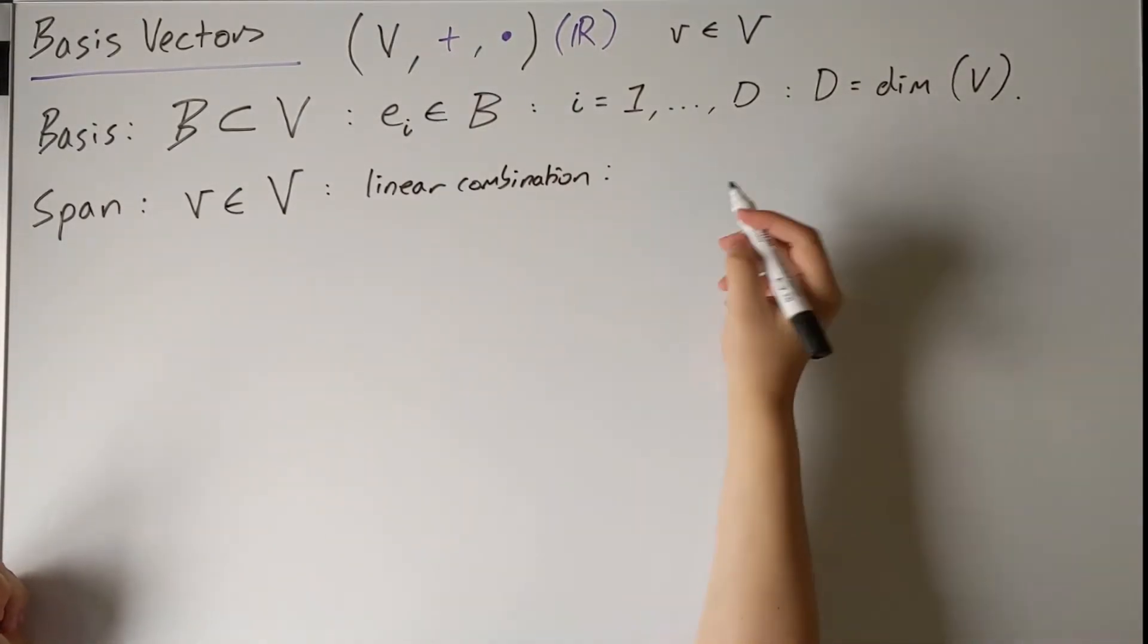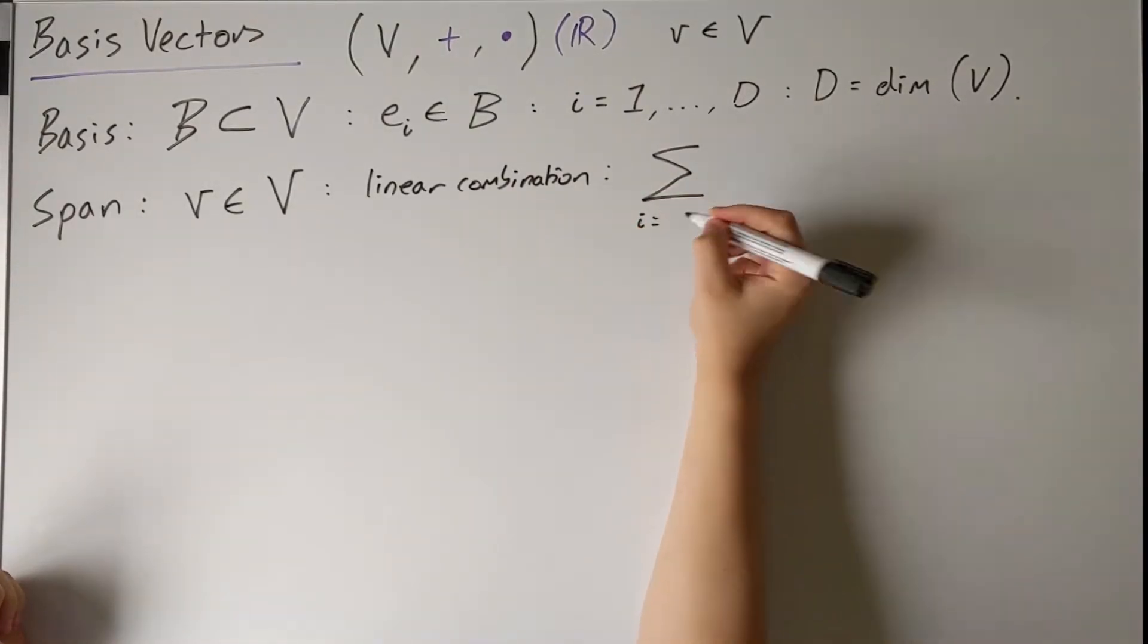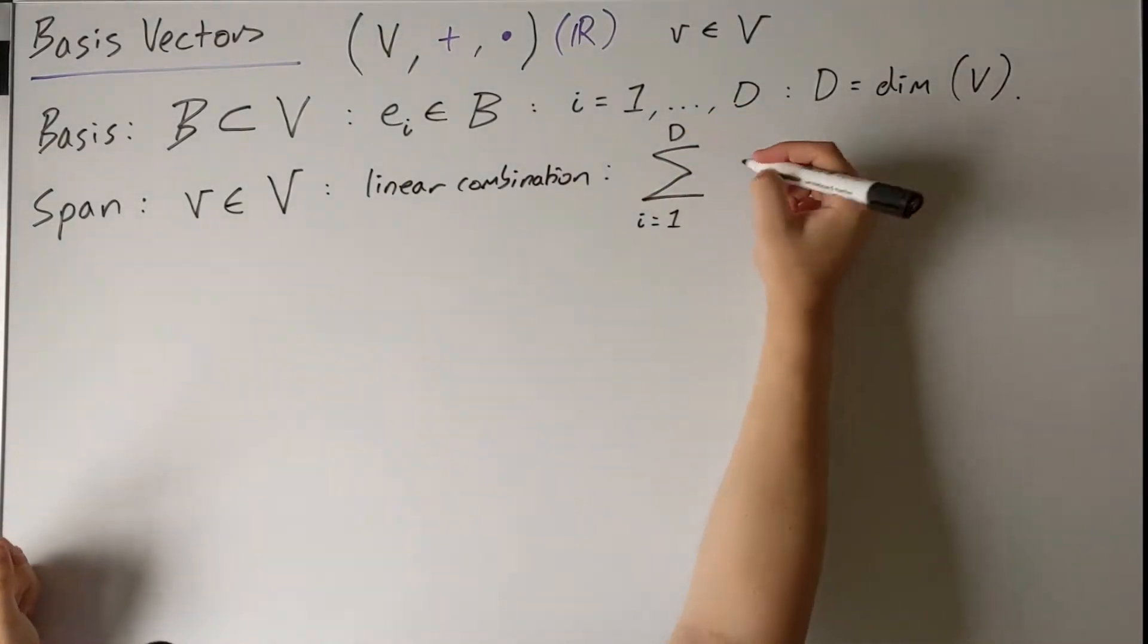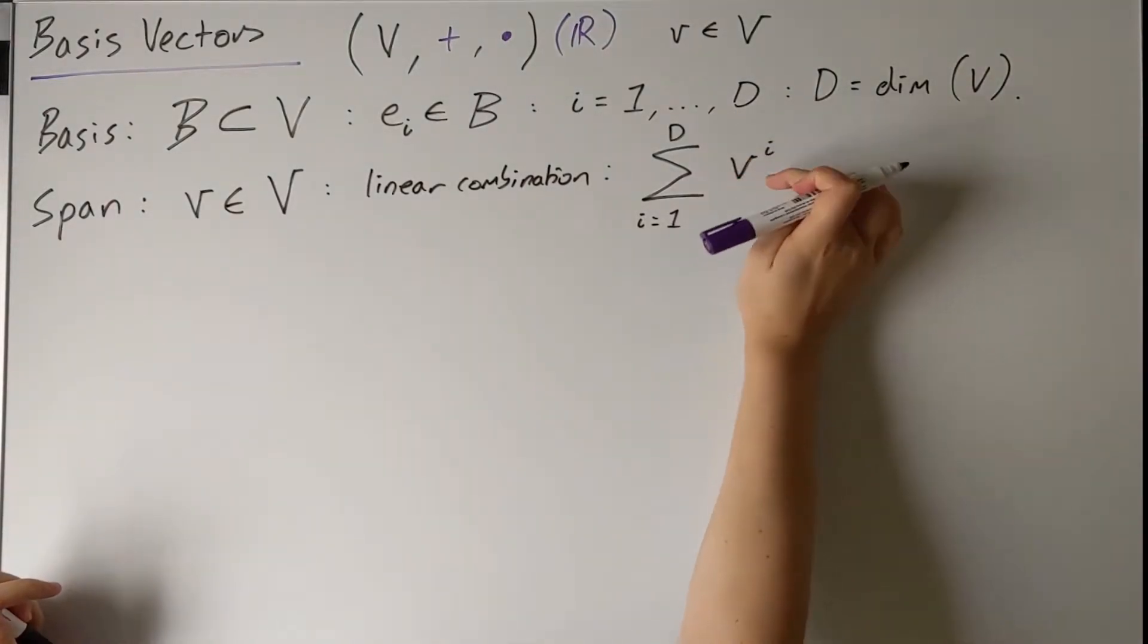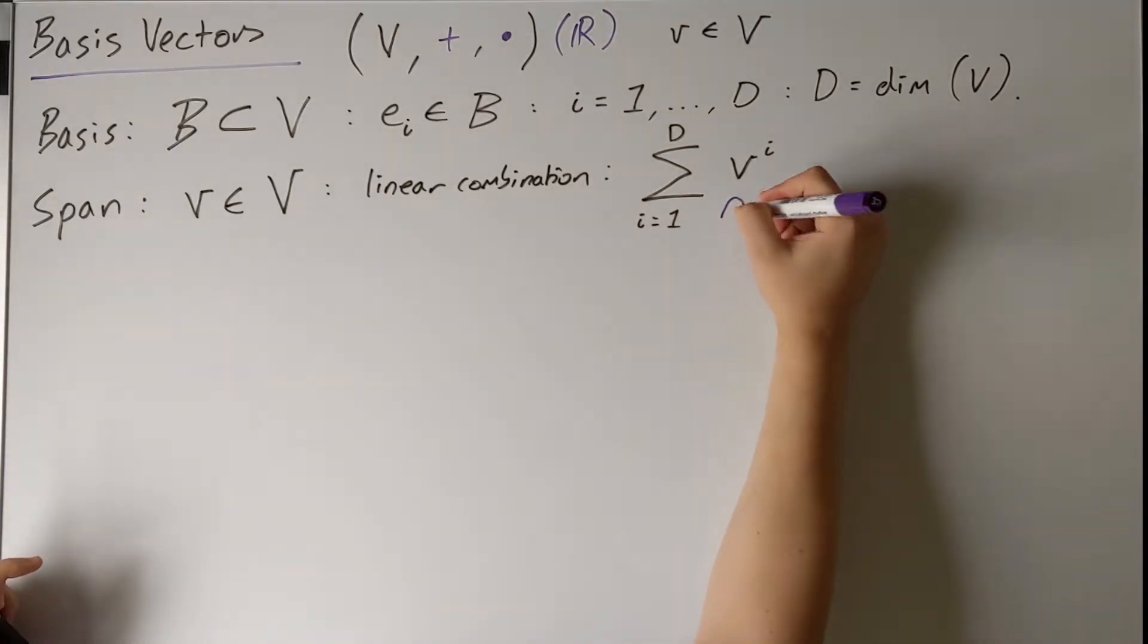Well, a linear combination is simply a sum. A slightly special kind of sum, which we'll talk about in a second. But for now, it's just a sum over something which I'm going to call lowercase v superscript i. Anyway, these objects, these v^i's, are going to be drawn from our field, so they're going to be scalars.